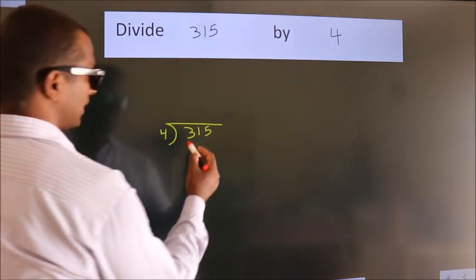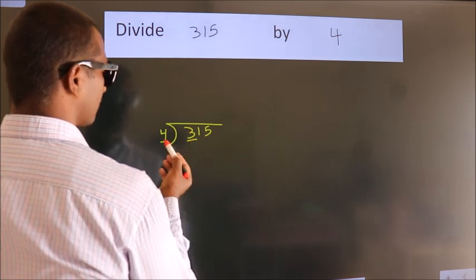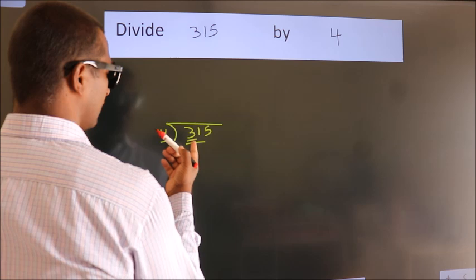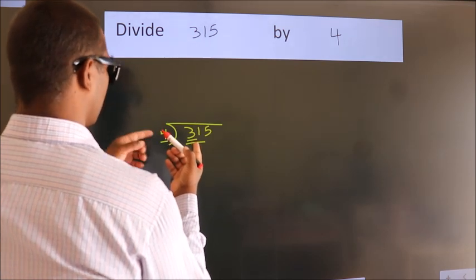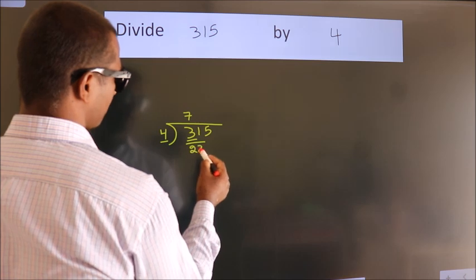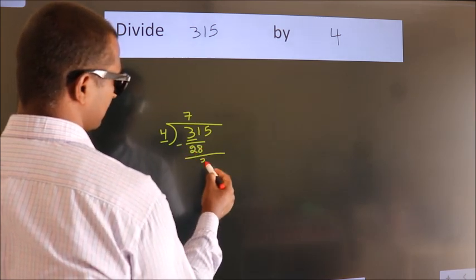Next, here we have 3. Here 4. 3 is smaller than 4, so we should take 2 numbers: 31. A number close to 31 in the 4 table is 4 times 7 equals 28. Now we should subtract. We get 3.